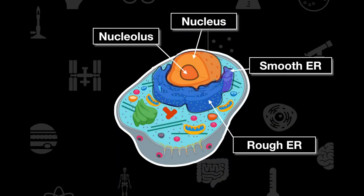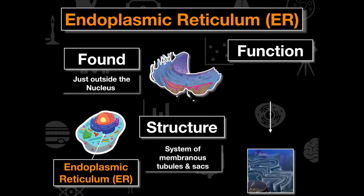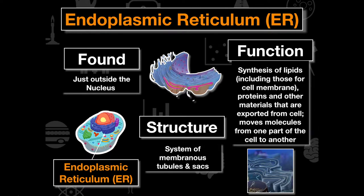The next organelle is the smooth and rough endoplasmic reticulum. The endoplasmic reticulum is found just outside the nucleus and its structure consists of membranous tubules and sacs. Its function is the synthesis of lipids and proteins and other materials, and it allows the cell to modify those lipids and proteins and transport them to other parts of the cell.